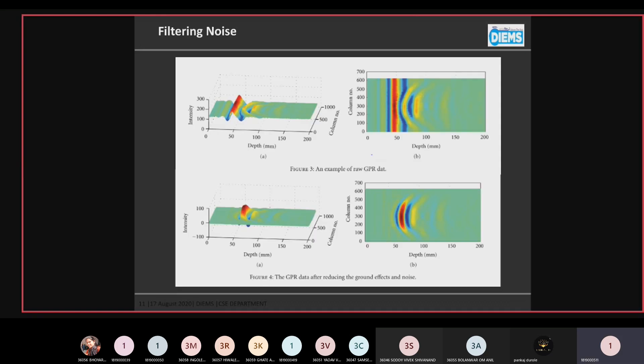The graph of filtering noise: the first graph is plotted with raw data, and the second graph is plotted after the noise has been reduced from the graphs.